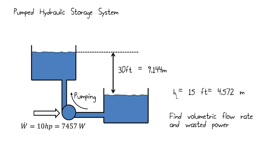Another problem that we're going to look at is pumped hydraulic storage. So here we're pumping water from one tank up to another tank, a distance of 30 feet. We know that the head loss is equal to 15 feet. That's our loss head, a measure of the lost energy associated with this process. And we know the work rate, how much work is being done in this pump, in horsepower, which we can convert to watts. And we're asked to find the volumetric flow rate and the total wasted power in this process.